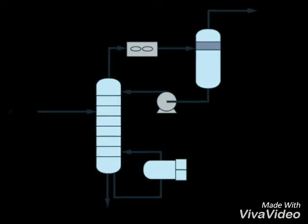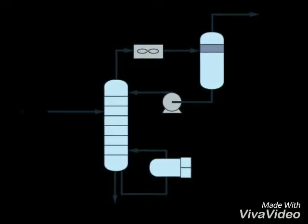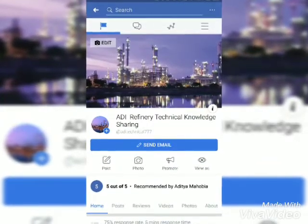From the flash drum, it goes to the regeneration section. The regeneration section contains the amine regenerator column, which is equipped with LP steam reboilers at the bottom.